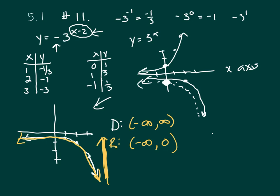The y-intercept. The way you find the y-intercept you always let x equals 0. If you let x be 0, you get y equals -3 to the 0 minus 2, and that's y equals -3 to the -2, which is -1 over 3 squared, or -1/9 is the y-intercept.